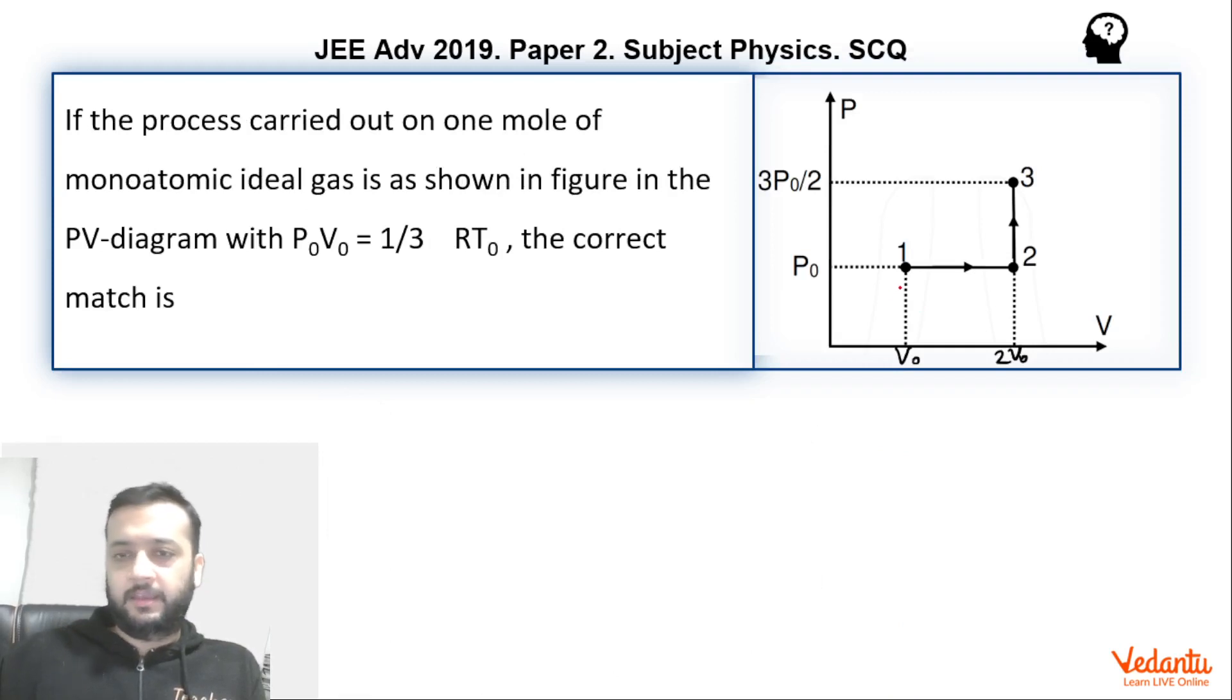So let's quickly conclude the work done. For the PV graph, the area represents the work done. So work done in 1, 2, 3 will be in 2, 3 itself will be 0 because it's an isochoric process. So this area we can say P0 into V0. Since we have to find the answer in terms of R and T0, so this P0V0 is nothing but 1 by 3 RT0.